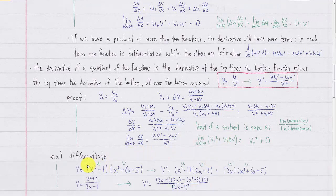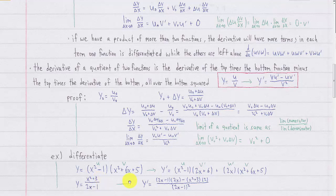Let's look at two examples using the product rule and the quotient rule. Here we have a product of two expressions. We label one as u and the other as v. The derivative is: leave the first, differentiate the second, plus differentiate the first and leave the second. For the quotient rule example, the top is x squared plus 3 and the bottom is 2x minus 1. So we leave the bottom, differentiate the top, minus leave the top, differentiate the bottom, all over the bottom squared. Then you could simplify.